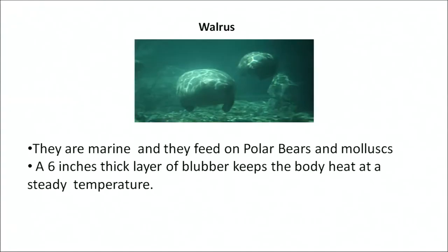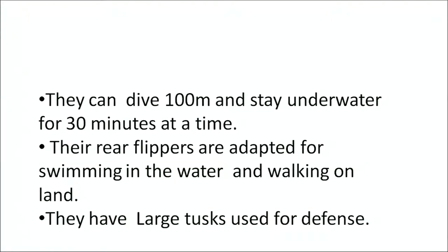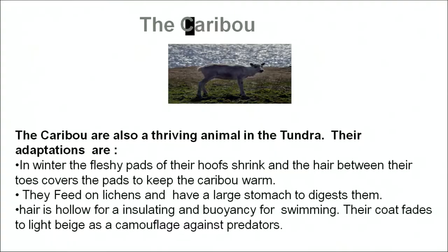The walrus is another example of polar animals. They are marine and feed on mollusks. A 6-inch thick layer of blubber keeps the walrus warm and heat-stable. They can dive up to 100 meters and stay underwater for 30 minutes at a time. Their rear flippers are adapted for swimming in water and walking on land, and they have tusks used for defence. The caribou is another interesting animal of the tundra biome. The fleshy pads of their hooves shrink and hair between their toes covers the pads to keep the caribou warm. They feed on lichens and have a large stomach to digest them. Their hollow hair provides insulation and buoyancy for swimming, and their coat fades to a light colour to camouflage against predators.